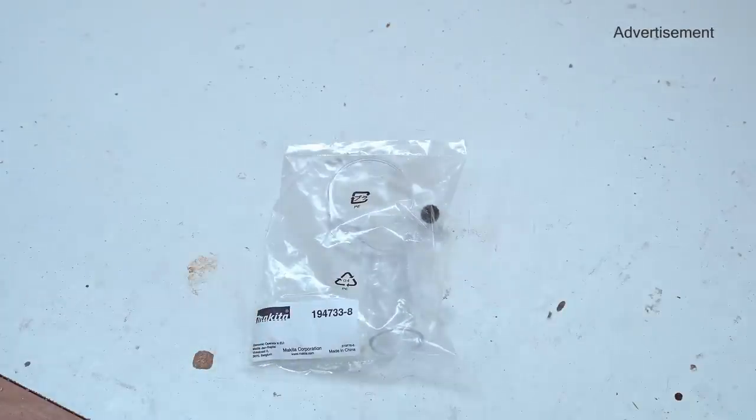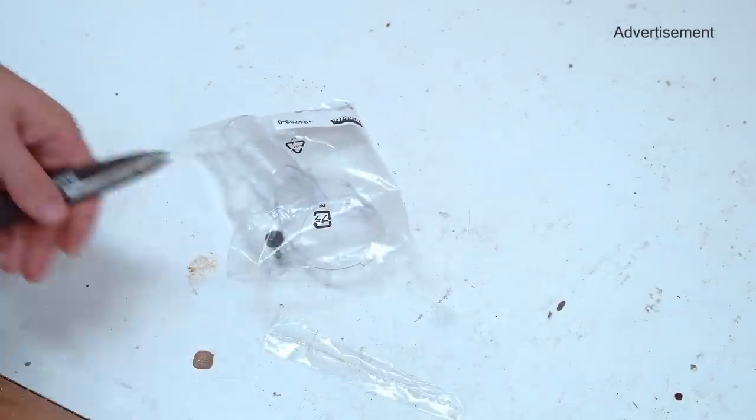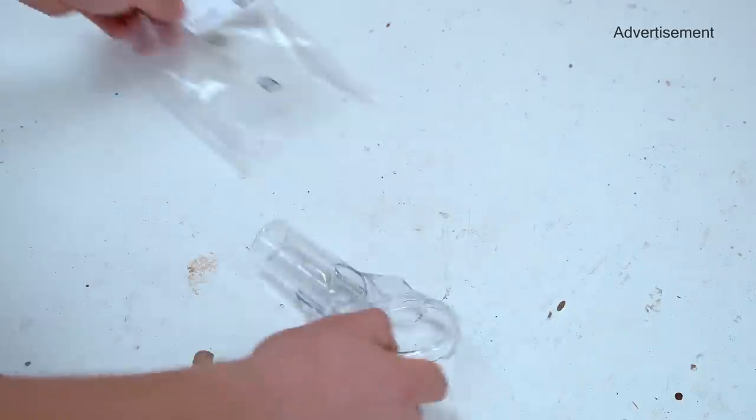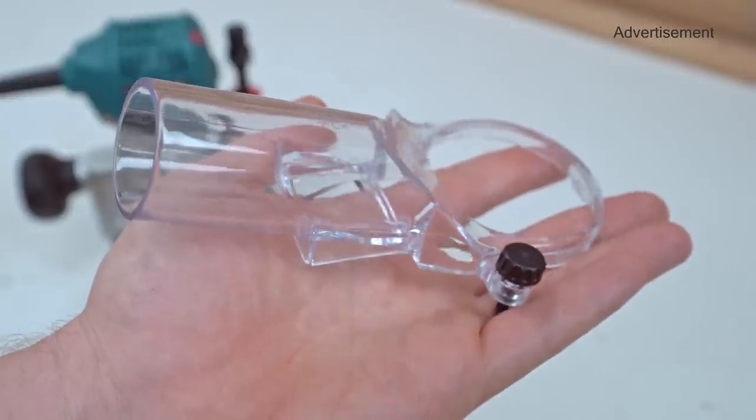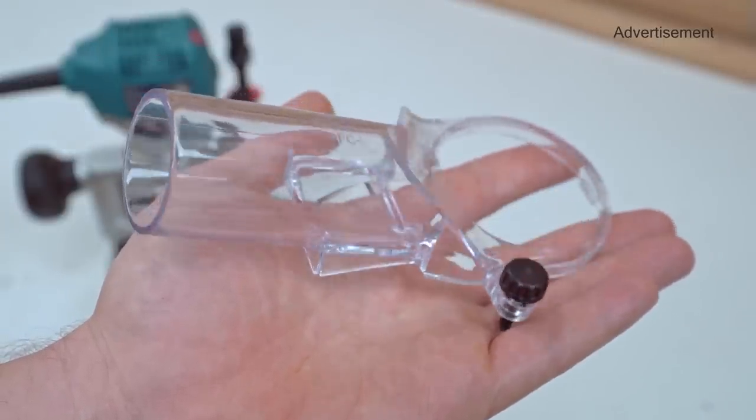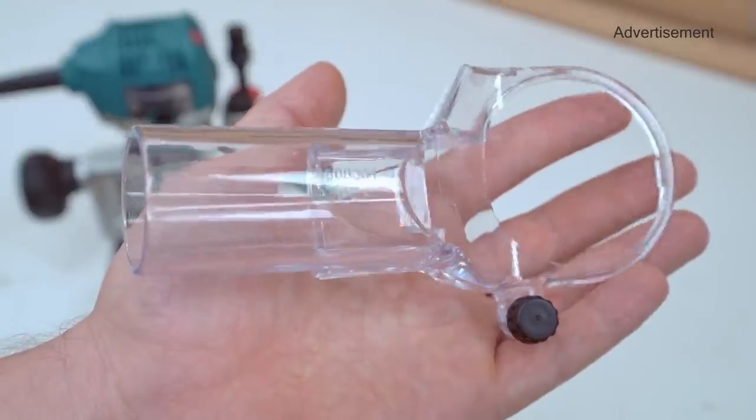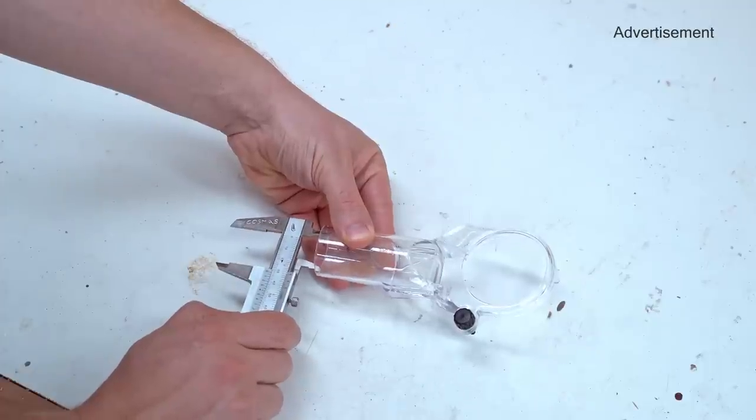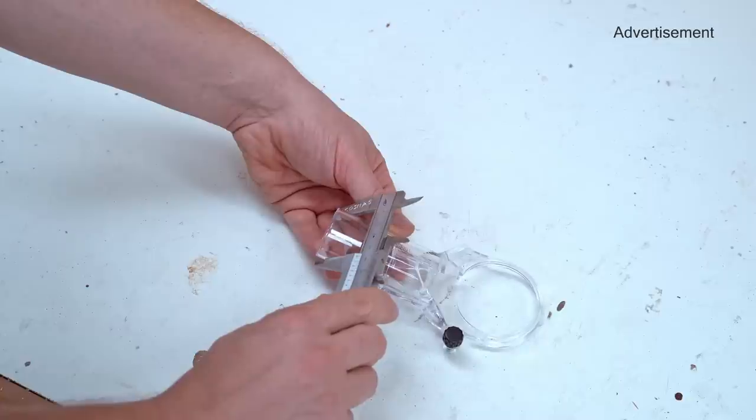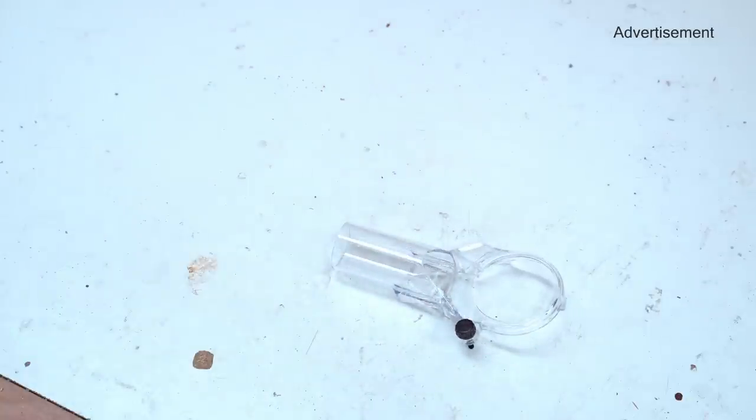This is the original Makita dust collection shroud. Unfortunately you have to buy it separately but it only costs a couple of bucks. It's made from 2mm thick polycarbonate, pretty strong compared to most other router dust collection gadgets. A couple of vendors sell this as being a 35mm adapter but the inner diameter is actually 32mm and the outer diameter 37.5mm.